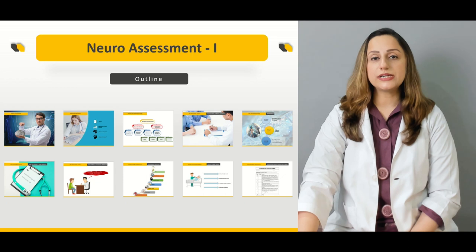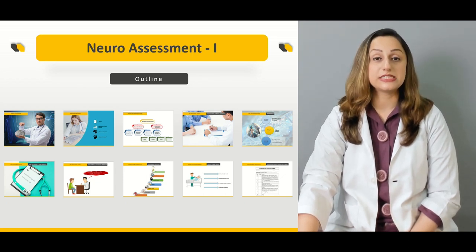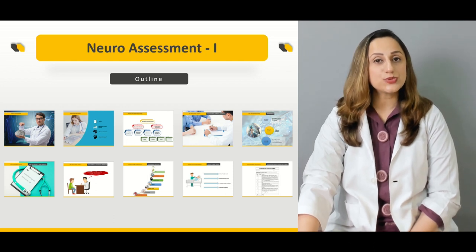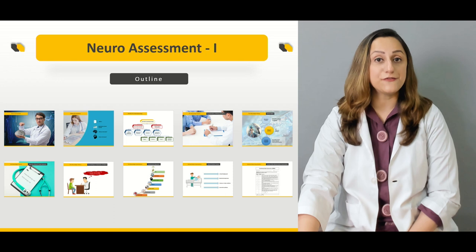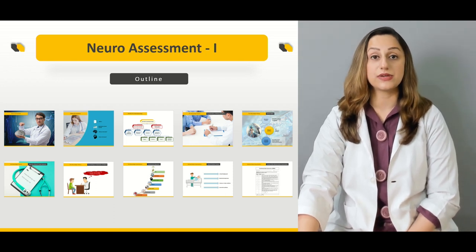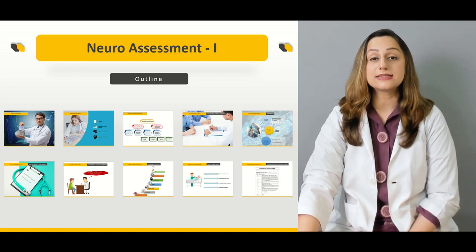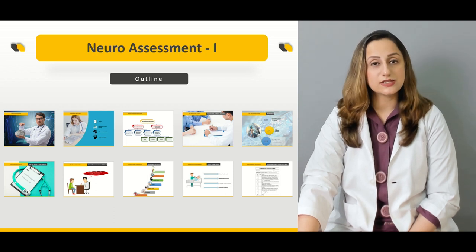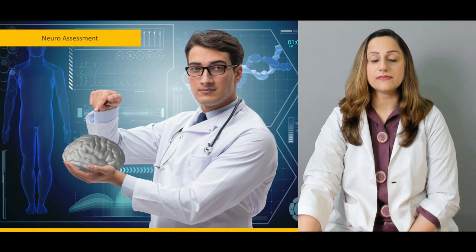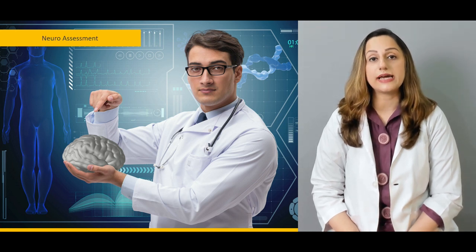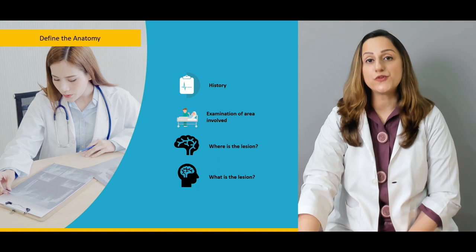In this lecture, we'd be focusing on the key features of the neuroassessment, particularly history taking. Having to assess a patient neurologically, it's very important to have background anatomical knowledge of the central nervous system, as well as the peripheral and autonomic nervous system, and that is what we'd be discussing here.